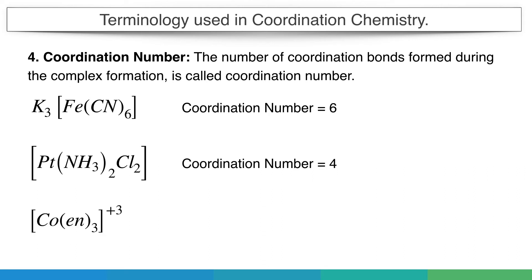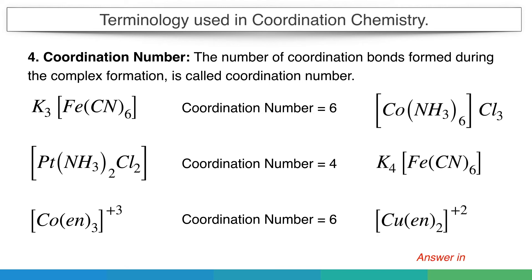In trisethylenediamine cobalt, cobalt is attached with three ethylenediamine groups inside the square bracket. You might say coordination number is three, but note that ethylenediamine is a bidentate ligand, meaning one ethylenediamine can form two bonds. So in total there are six coordinate bonds, and the coordination number is six. Some more molecules are given — please try to find the exact coordination number and write your answer in the comment box.